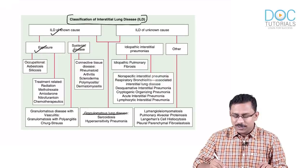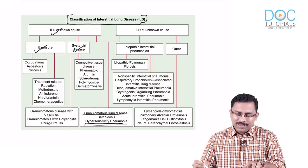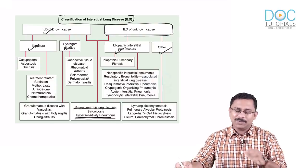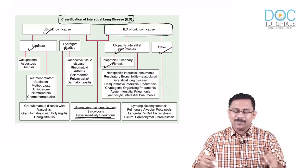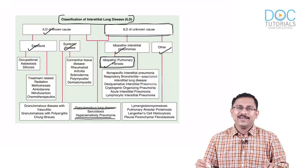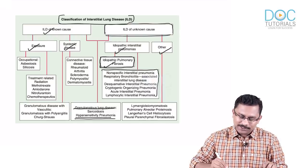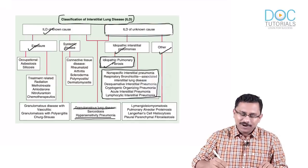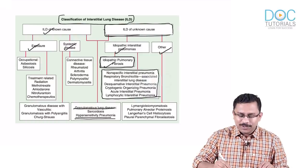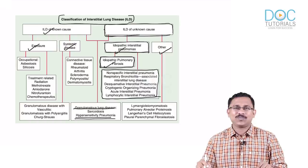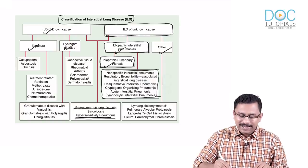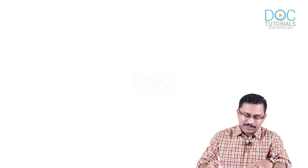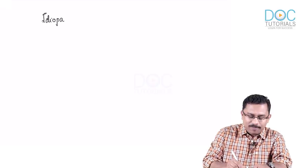ILDs of unknown cause are divided into idiopathic interstitial pneumonias and the 'others' subgroup. Among idiopathic interstitial pneumonias, the most important one is IPF — idiopathic pulmonary fibrosis — and there is a group of other disorders as well. We will now see in detail the individual subtypes under idiopathic interstitial pneumonias, starting with IPF.